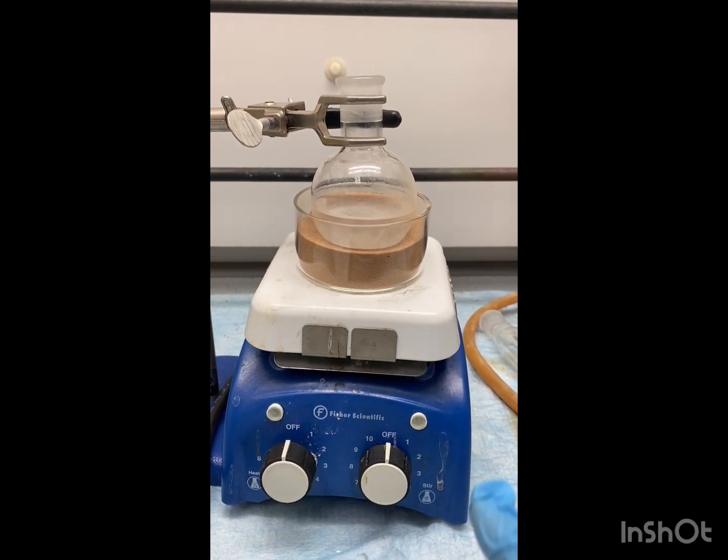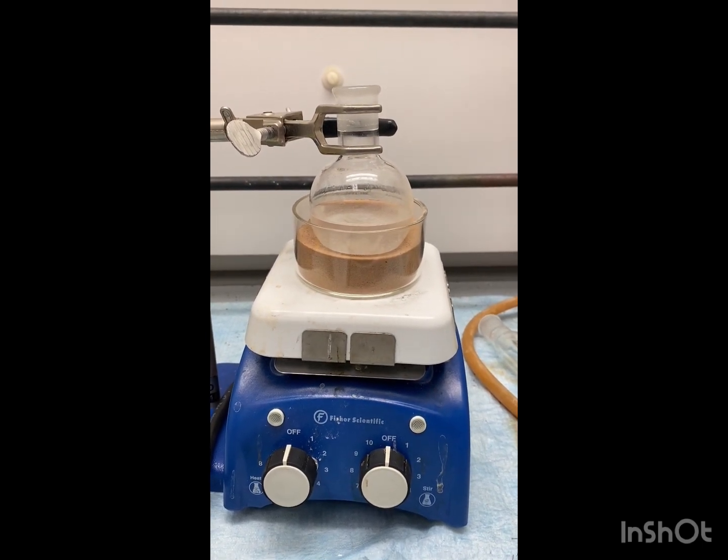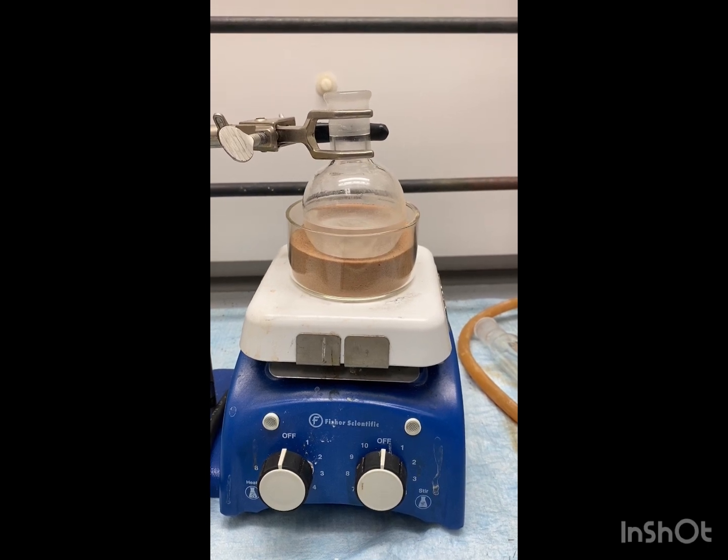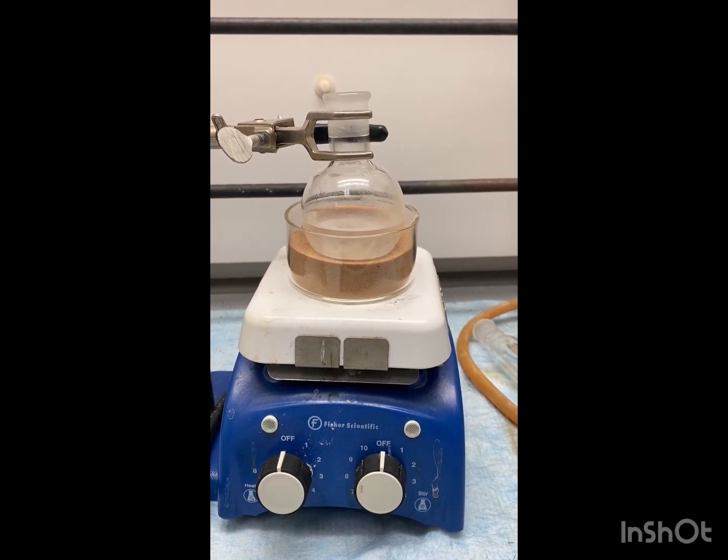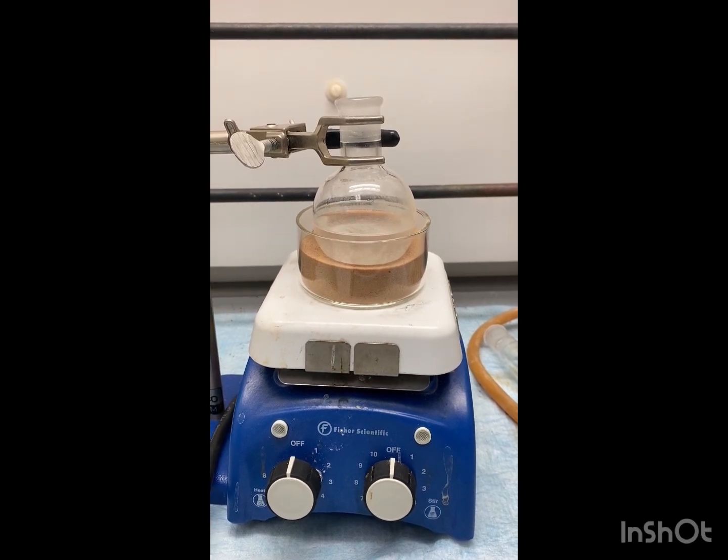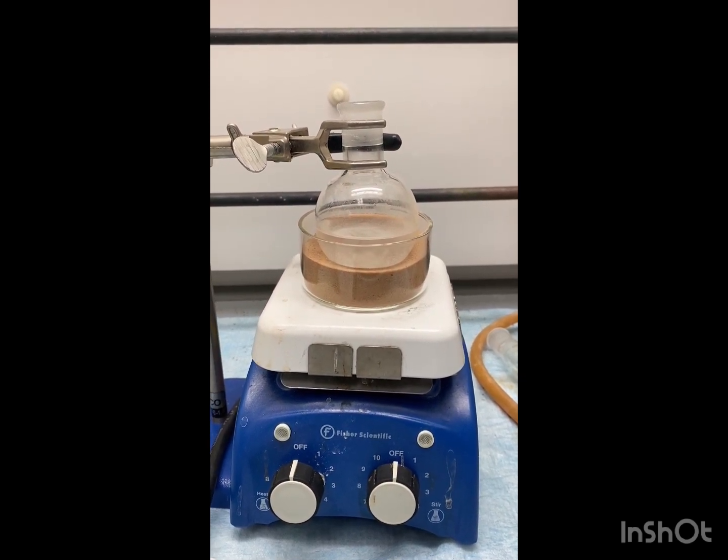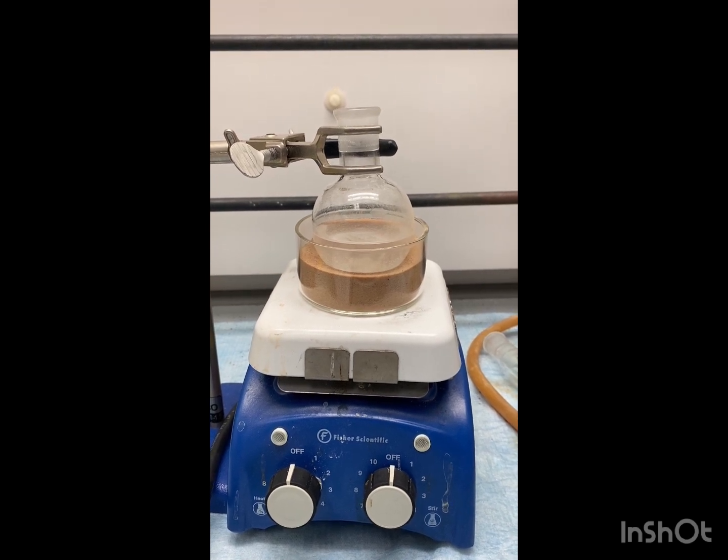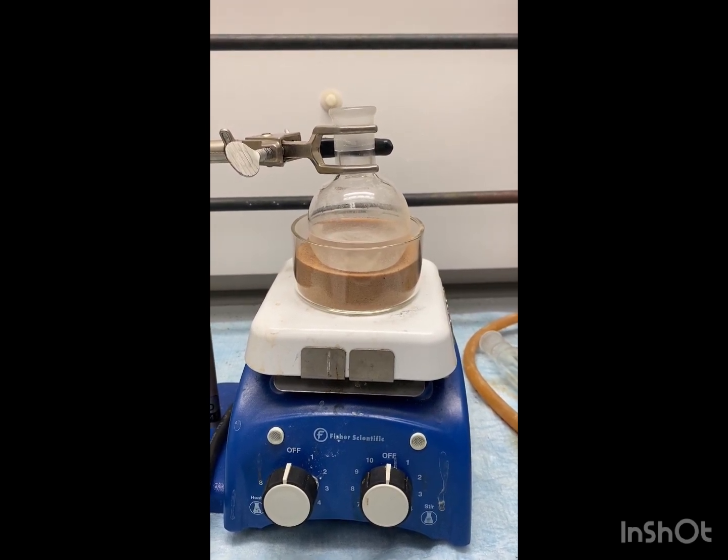We have a sand bath here on top of our hot plate. We are then going to put a condenser, and we're just going to gently reflux the mixture. We're also going to add a thermometer to the sand bath. You don't want it to reach over 200 degrees Celsius, so just monitor it. You're going to do this for about 15 minutes.